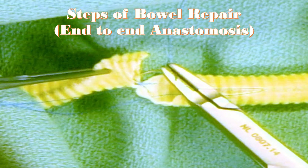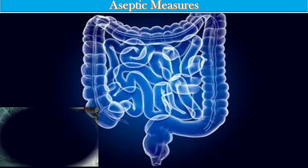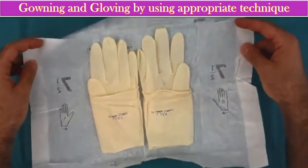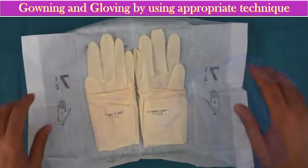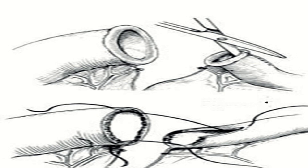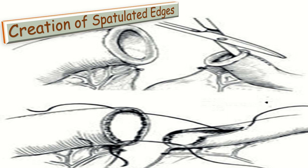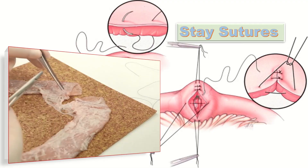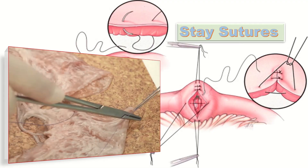Now we will discuss the steps of bowel repair by end-to-end anastomosis. First, take care of subject measures — do gowning and gloving using appropriate technique. In order to increase the lumen diameter, the bowel segment is incised on the anti-mesenteric border to create a larger spatulated edge. Before starting the repair, stay sutures are taken at the mesenteric borders.